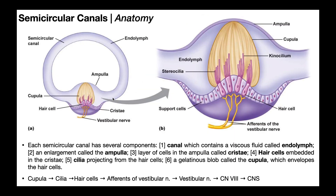Here's a zoomed-in look at one of the semicircular canals. Each one has several components. Obviously there's the canal itself, which is filled with a viscous fluid called endolymph. At the base there's an enlargement called the ampulla. And then within the ampulla, there is a layer of cells called cristae. Cristae refers to the form or shape that the cells take — they have these folds, similar to the cristae of mitochondria.